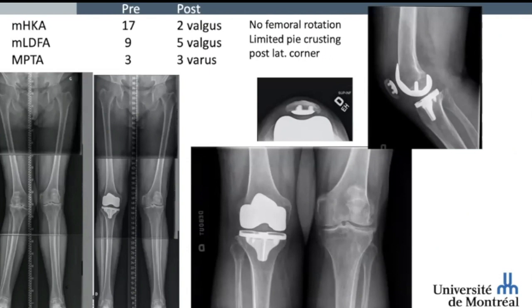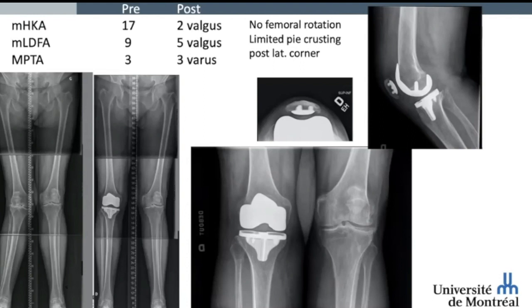This is the post-op radiograph. We achieved our goal with an HKA of 2 degree valgus post-op, LDFA of 5 degree valgus, and MPTA of 3 degree varus. There was no femoral rotation applied to the implant, and we had to perform limited pie-crusting of the posterolateral corner capsule to balance the knee due to the minor adjustment on the LDFA. With the femur in neutral rotation, we achieved perfect patellar tracking centered into the trochlea. In this severe valgus case in an elderly woman, we were able to use a non-cemented implant, and on the lateral view you can see the nice fit of the femoral component with perfect alignment of the condyles and the anterior trochlea.